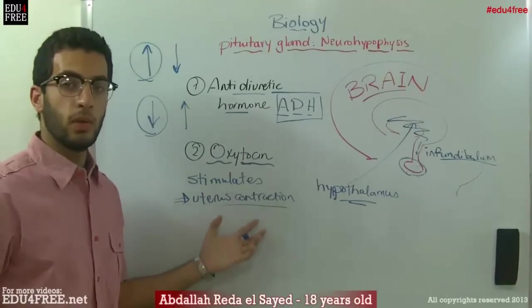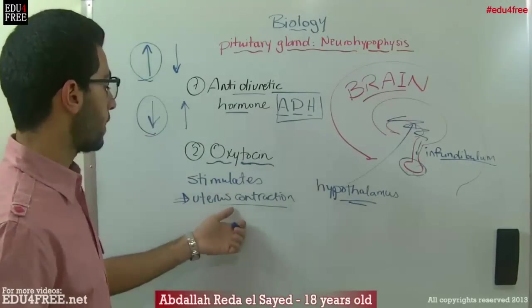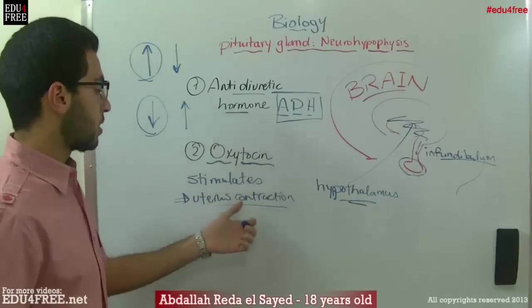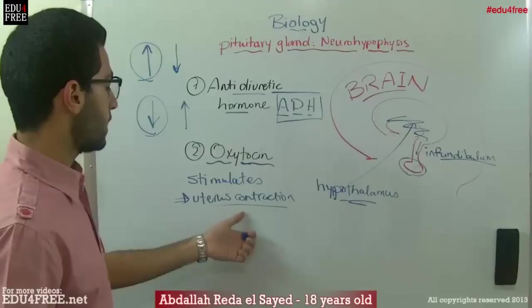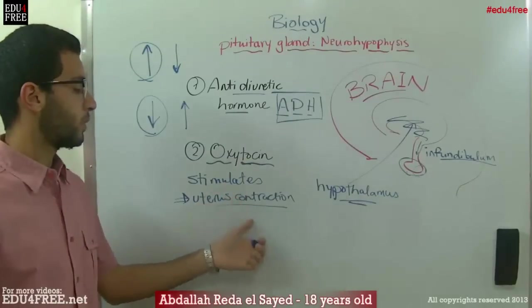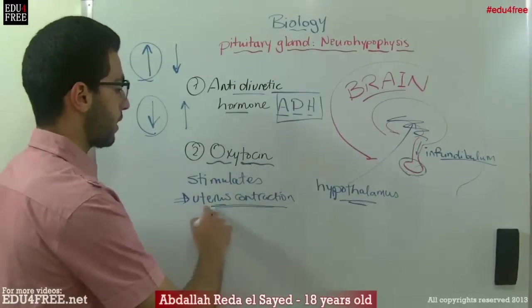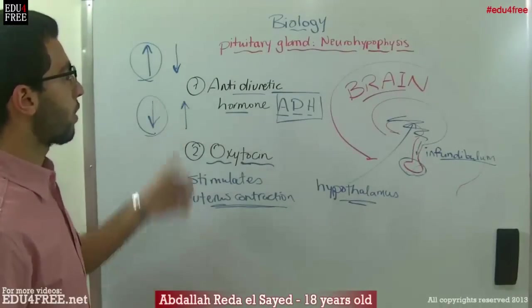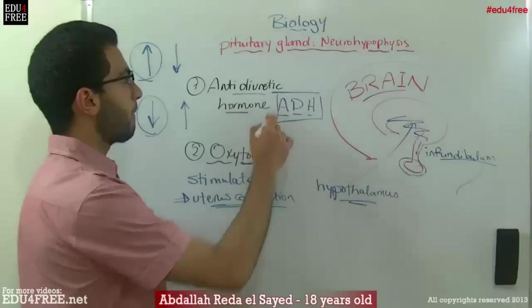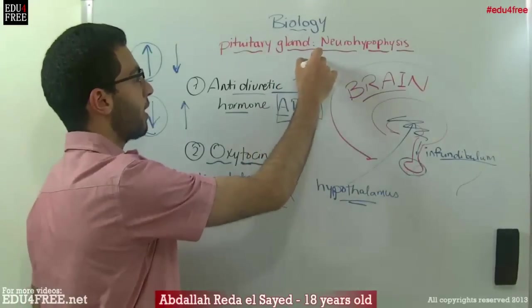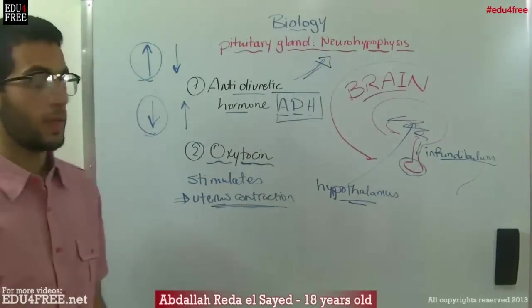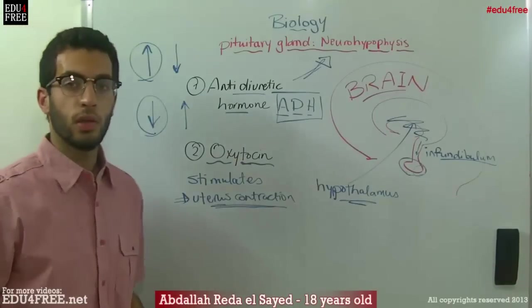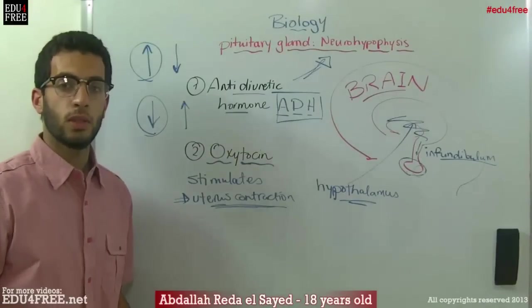In addition, oxytocin stimulates the mammary glands after birth, so it stimulates females to produce milk after birth. So these are the functions of the two hormones produced from the neurohypophysis of the pituitary gland. Next time we will talk about the thyroid gland — thank you for watching.